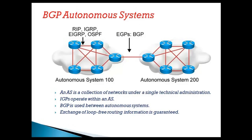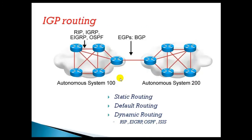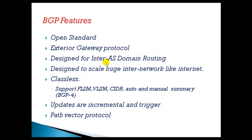An autonomous system is a collection of routers under a common administration. When communicating between two or more different autonomous system numbers — exchanging routes between them — we use BGP. Inside dynamic routing we have RIP, EIGRP, OSPF, IS-IS — all IGP protocols that operate within the same autonomous system numbers. For communication between different autonomous system numbers, we use BGP.